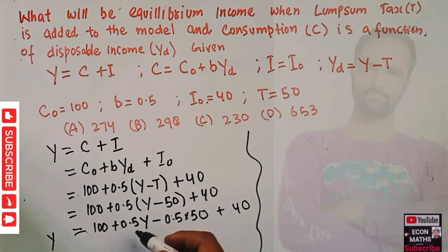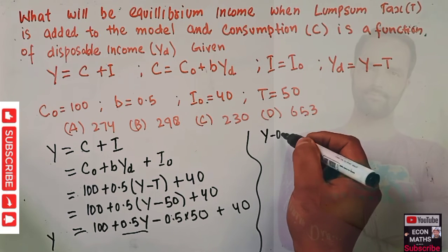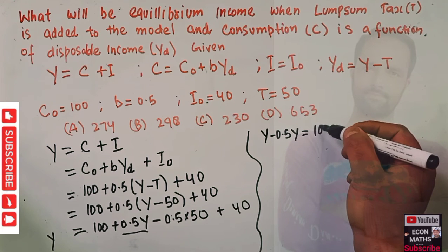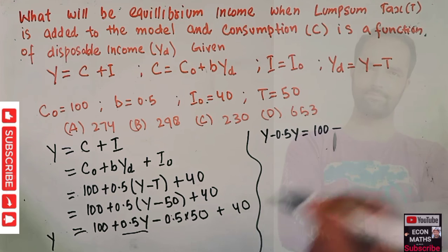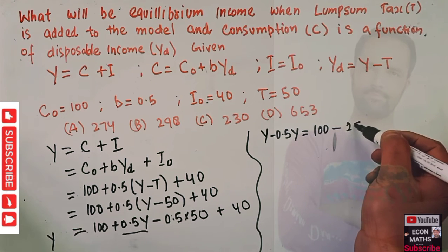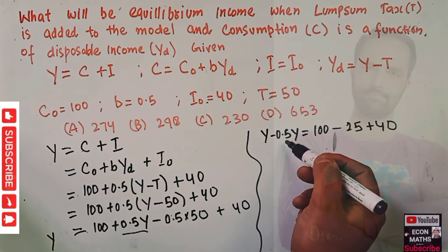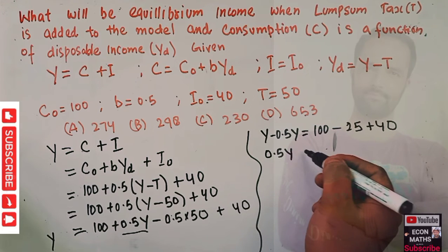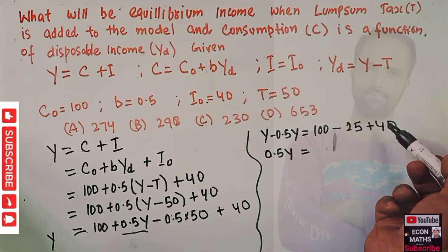If I transpose this on the left-hand side, Y minus 0.5 Y equals 100 minus (0.5 times 50 is 25) plus 40. When we subtract 0.5 Y from Y, we're left with 0.5 Y equals 100 plus 40, which is 140, minus 25.